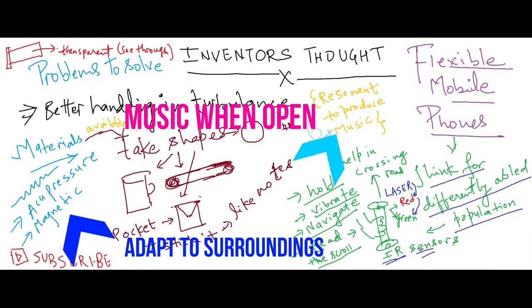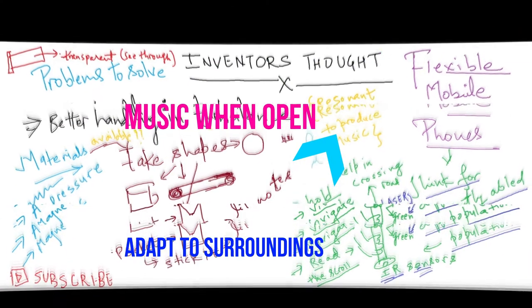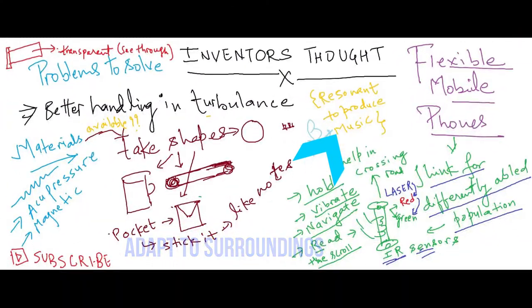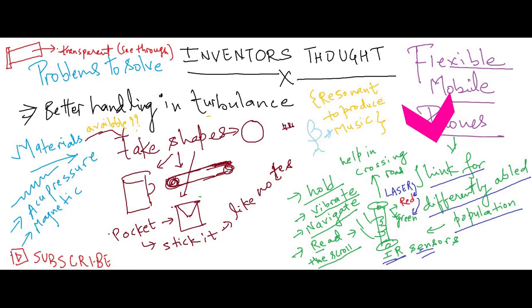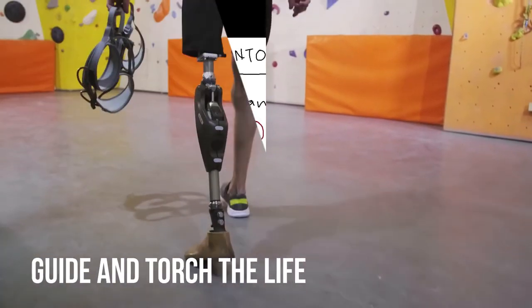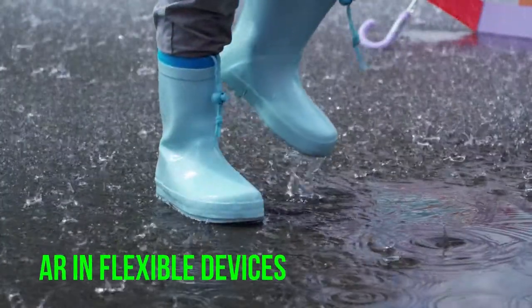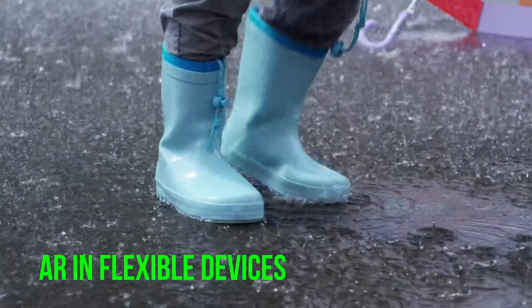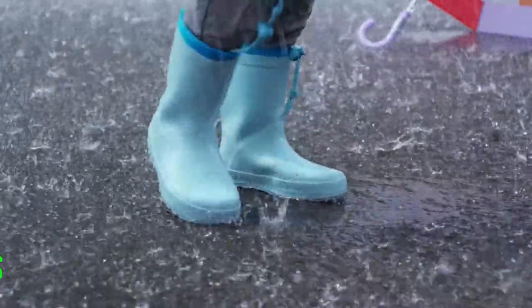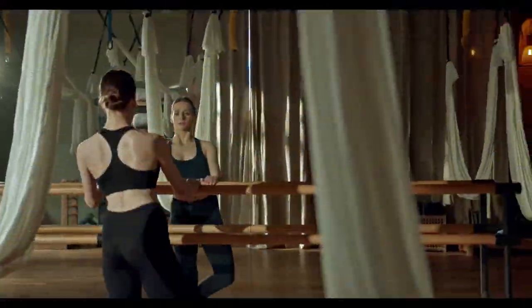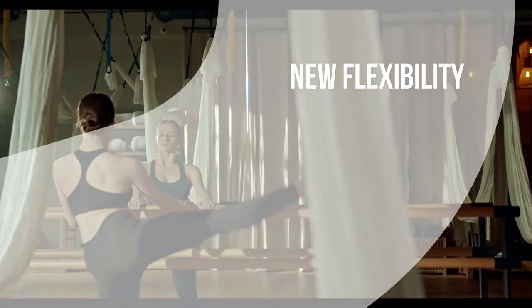It must be able to resonate to produce music. Material resonance can be amplified, or it can observe the environment to change itself. One can think of a flexible device for differently-abled populations. Also, what would be the future of augmented reality with flexible devices? A transparent flexible device can help in developing new types of applications.